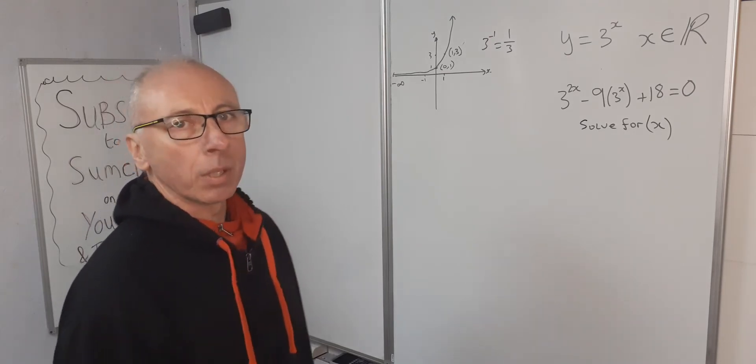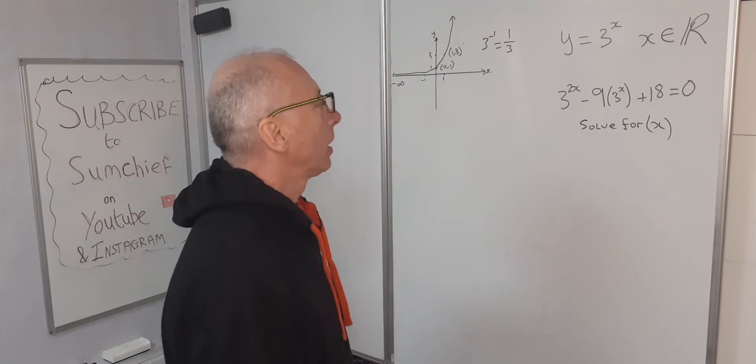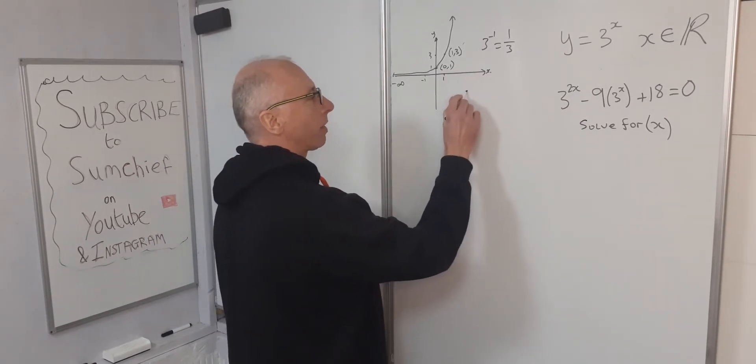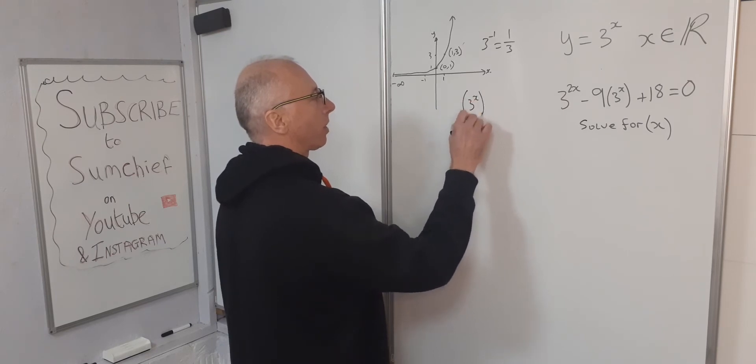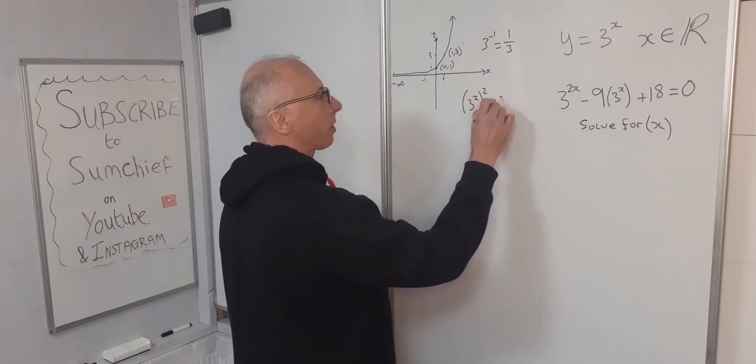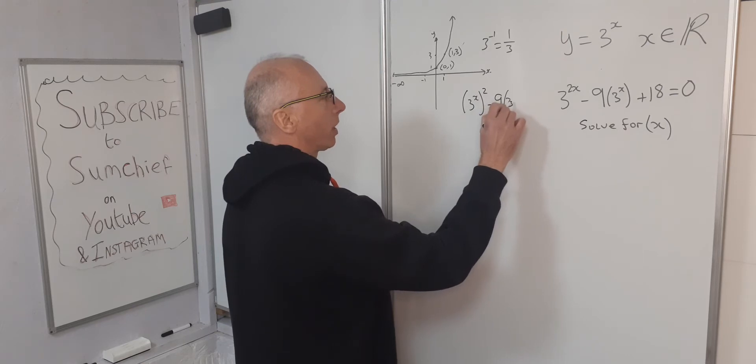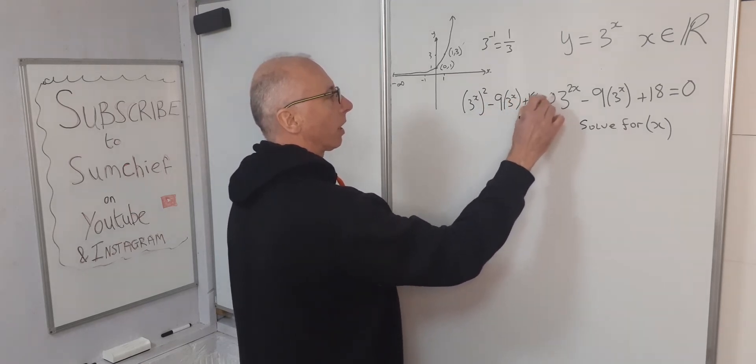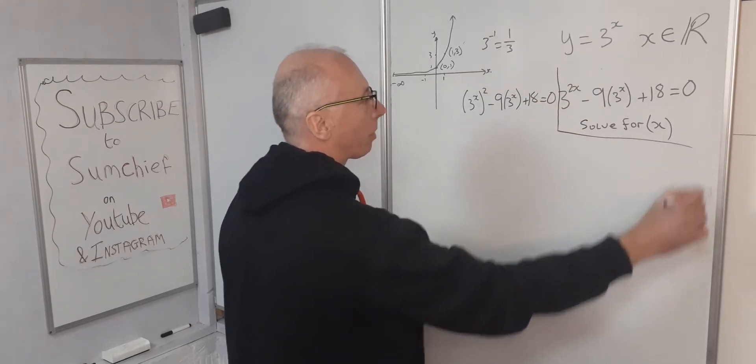So that looks to me like we've got a bit of a quadratic going on there. So let's just rewrite that just over here. So what we can say that is 3 to the x squared minus 9, 3 to the x plus 18 equals 0. Just put a little line there just to keep that separate.